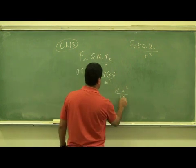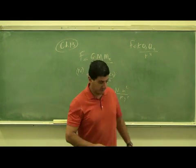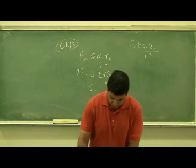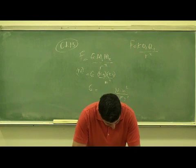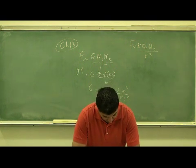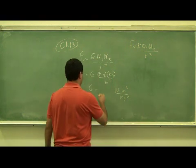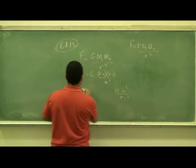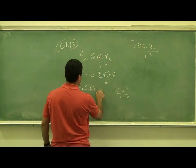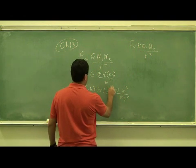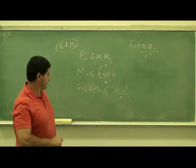The value of G I'm going to give you here is equal to 6.673 times 10 to the negative 11. Let's write that here: 6.673 times 10 to the negative 11.